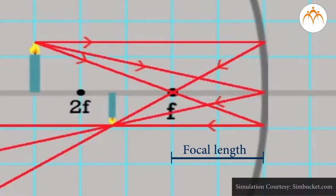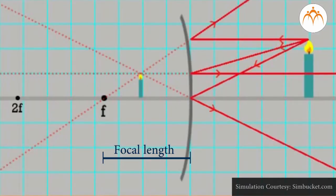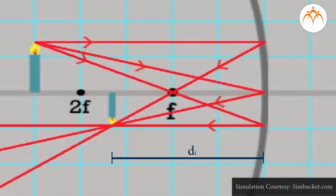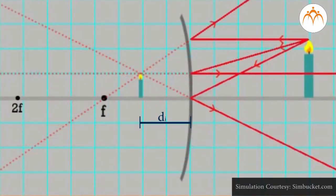Let's look at the sign conventions used in the mirror equation. Focal length is positive if the mirror is a concave mirror. Focal length is negative if the mirror is a convex mirror. Distance of image dI is positive if the image is a real image and located on the object side of the mirror. Distance of image dI is negative if the image is a virtual image and located behind the mirror.